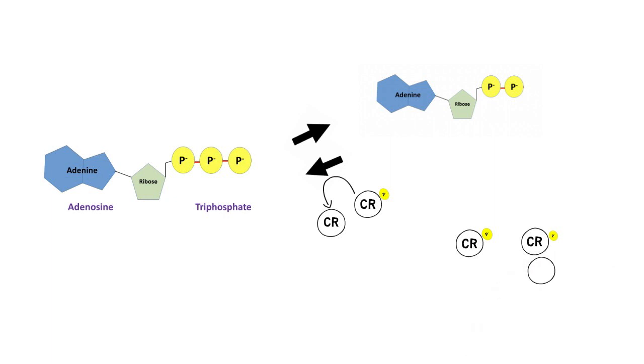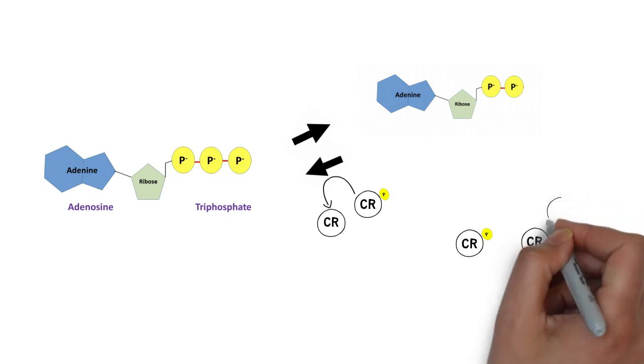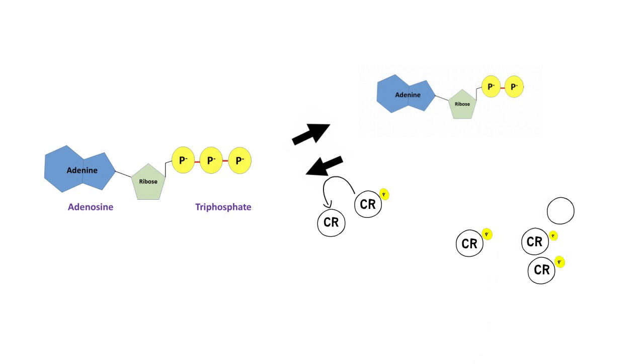So, creatine phosphate is essential in accelerating the process of ATP regeneration and it does this by donating its phosphate group, therefore supplementing with creatine increases the work our muscle cells can do.